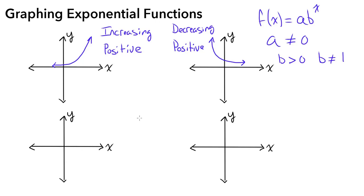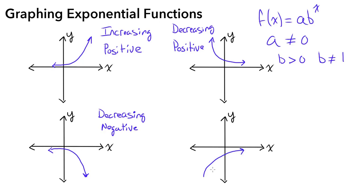We also have negative exponential functions, which are below the x-axis, meaning all y values are negative. If the graph moves lower as we go left to right, that's a decreasing negative exponential function. If it moves upward from left to right but stays below the x-axis, that's an increasing negative exponential function.